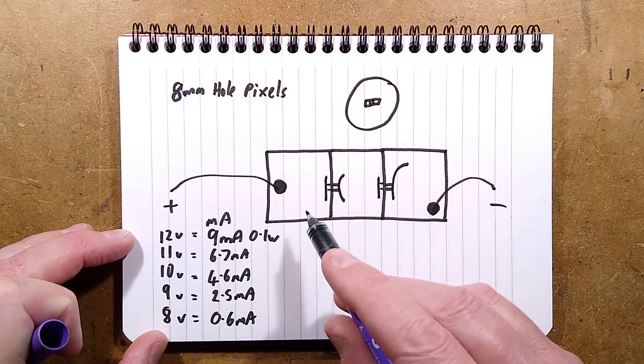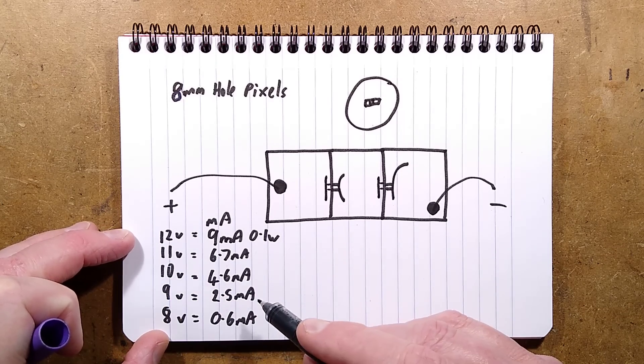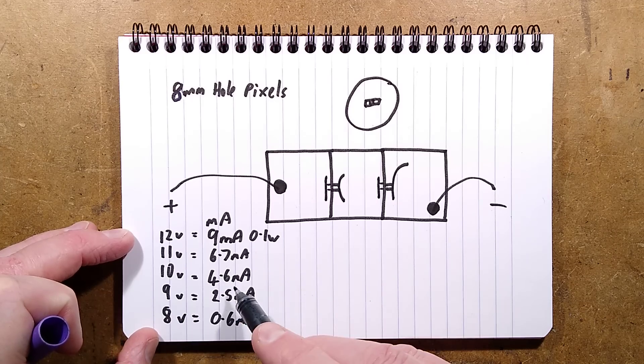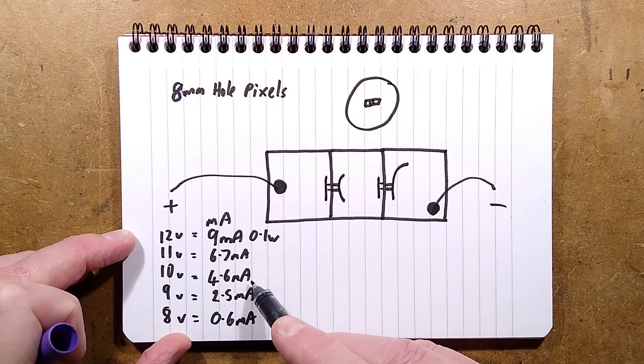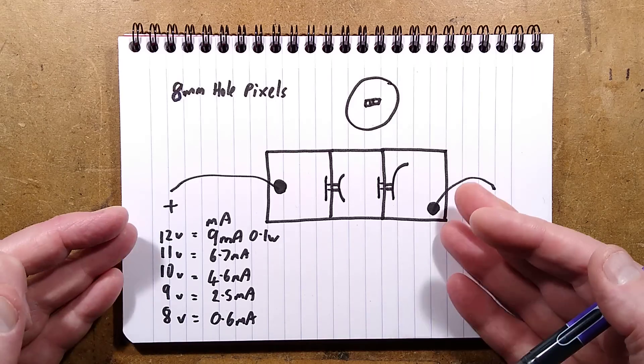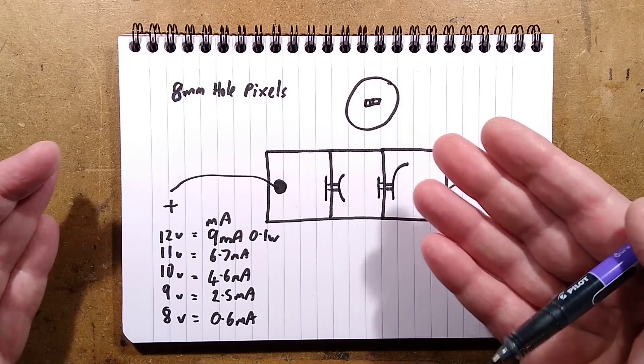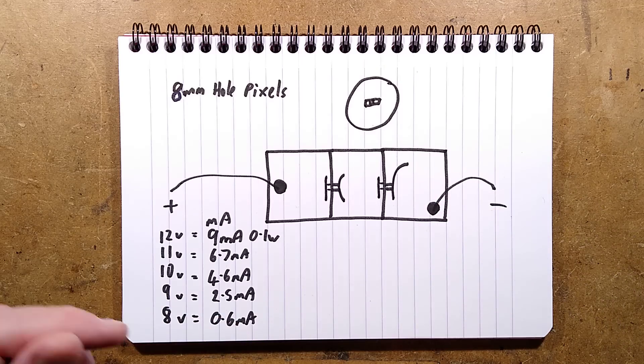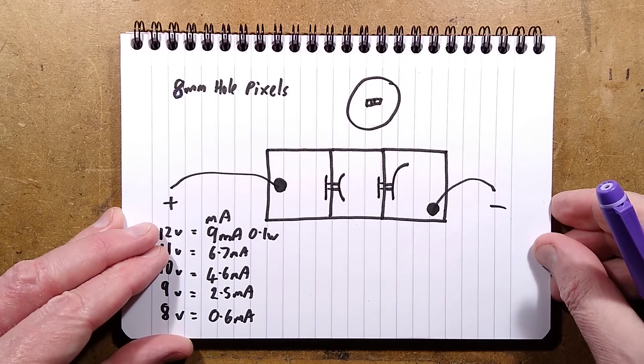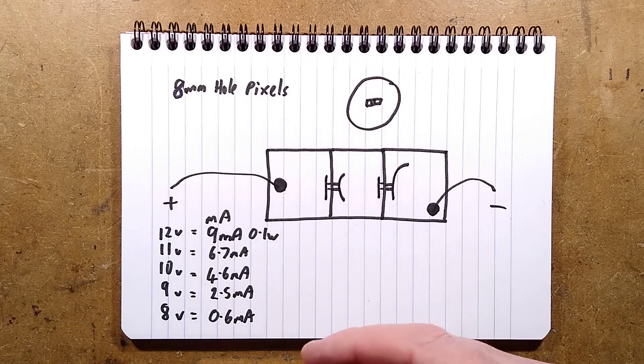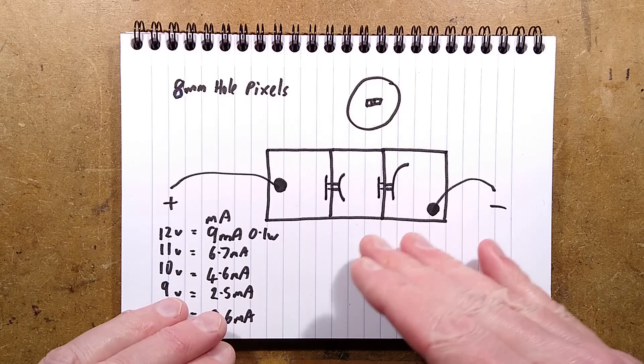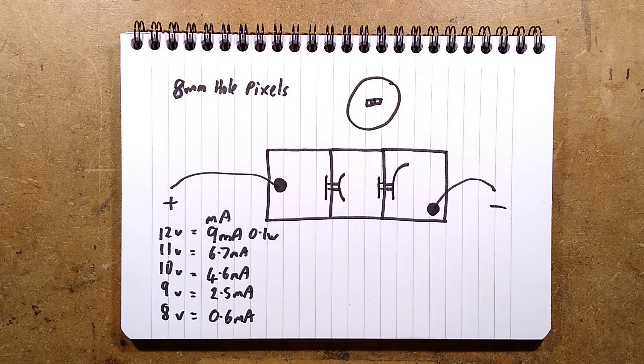The current at 12 volts, each LED draws 9 milliamps, which is about 0.1 watt. At 11 volts it drops to 6.7 milliamps. At 10 volts it drops to about half the original current at 4.6 milliamps. And at 9 volts, 2.5 milliamps, and 8 volts, 0.6 milliamps. And it's worth mentioning that even at low current these are quite bright. If you were using these indoors, I'd actually recommend using them closer to the 9 volt threshold. So this is where it's quite useful to have a variable voltage power supply so you can just nudge things a little bit. Or for short sections you could just basically have a wee cascade of diodes in series just to nudge the voltage down.